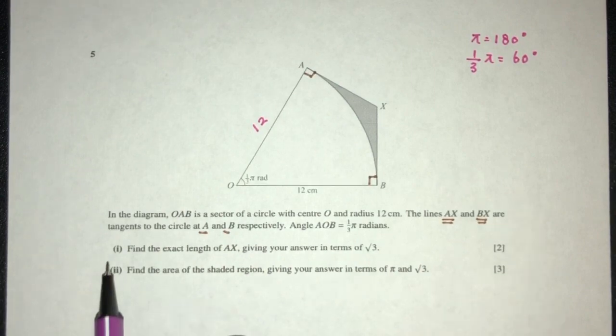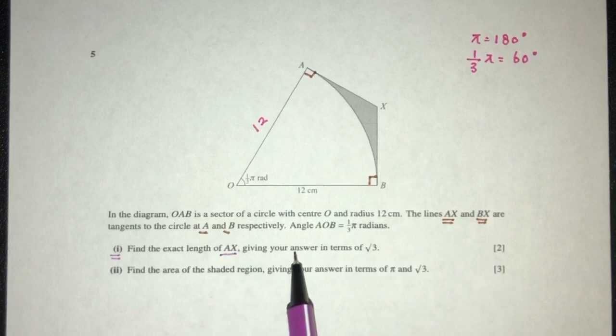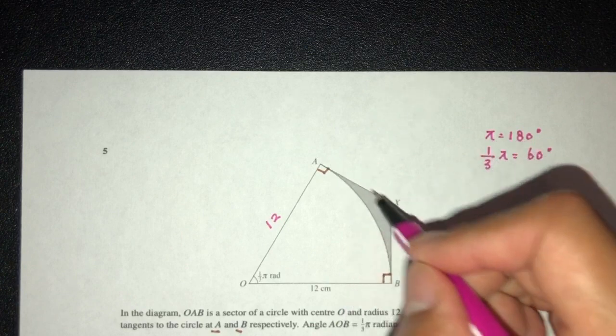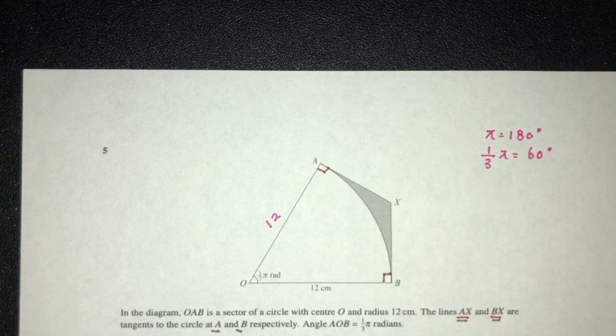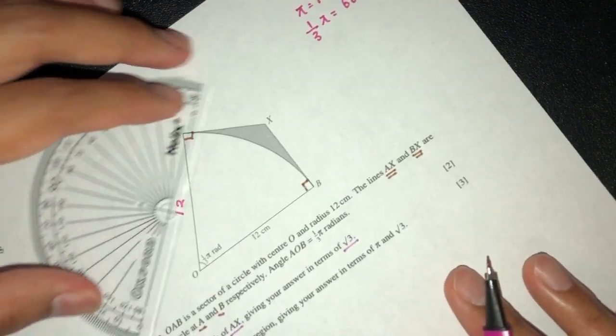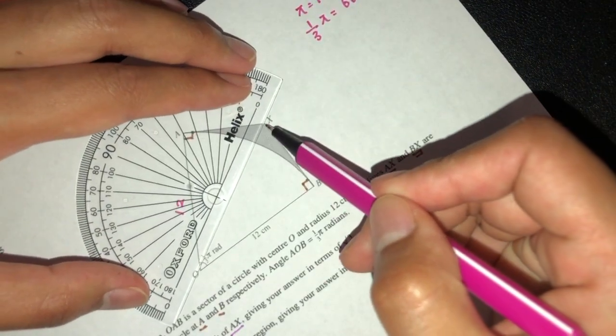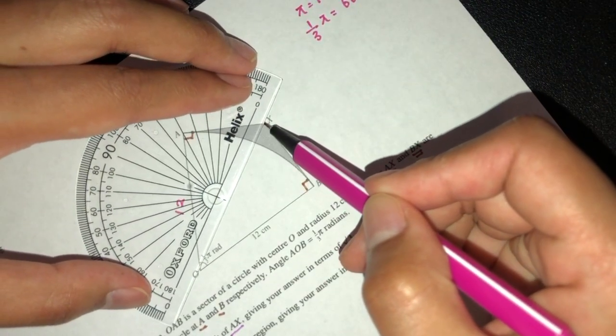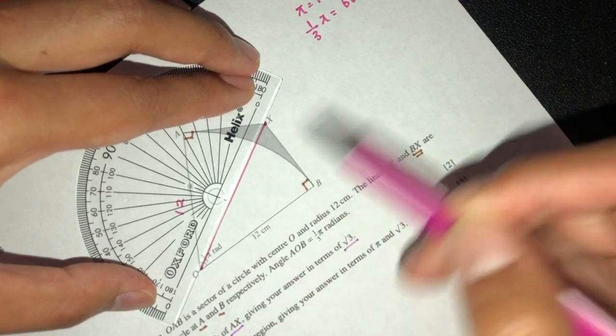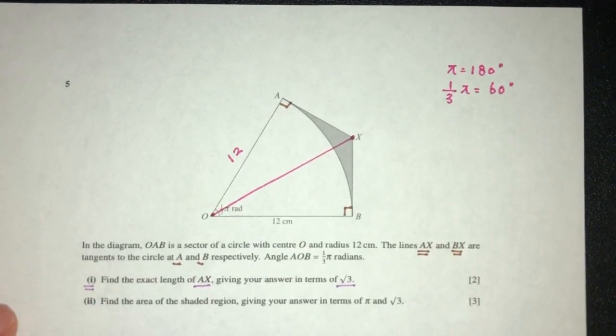Now part 1, we have to find the exact value of AX giving your answer in terms of √3. AX is this length. First, we can try to break this down and see what we can use from this shape. I can break this down into half.